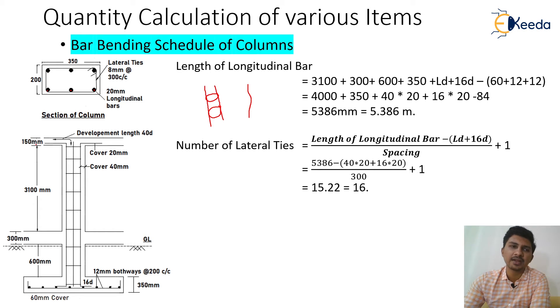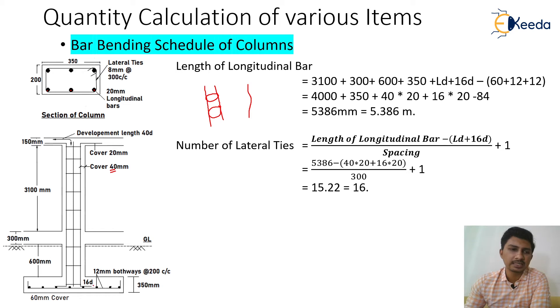The slab thickness given is 150 mm. The cover for the column reinforcement is 40 mm and the cover for the footing is 60 mm, as you can see at the bottom of the screen.